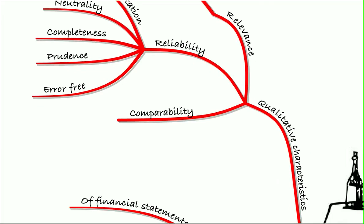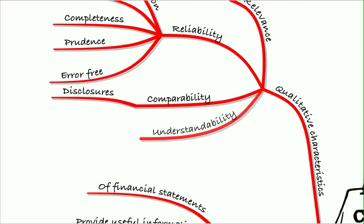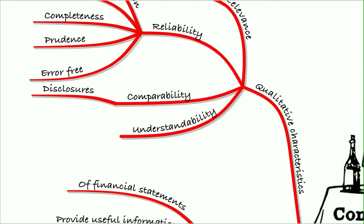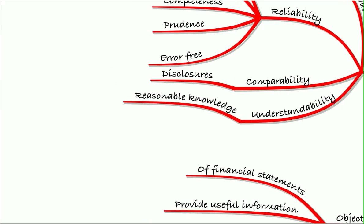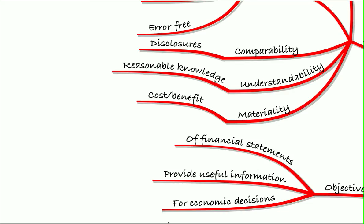It outlines that there should be comparability, so disclosures should be made to ensure that they are comparable. They should be understandable, and they should be understandable to someone who has a reasonable knowledge. So you don't have to be a qualified accountant to understand the financial statements. It also talks about materiality, which is not exceeding the benefit of actually doing something, so the cost not exceeding the benefit of preparing the financial statements.